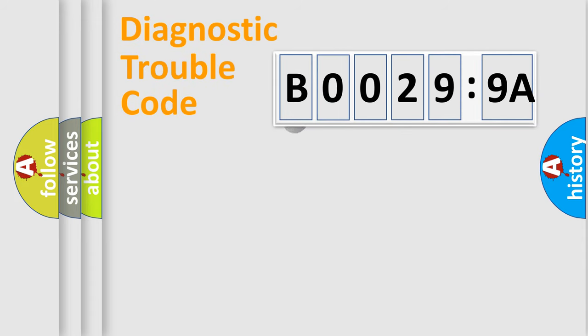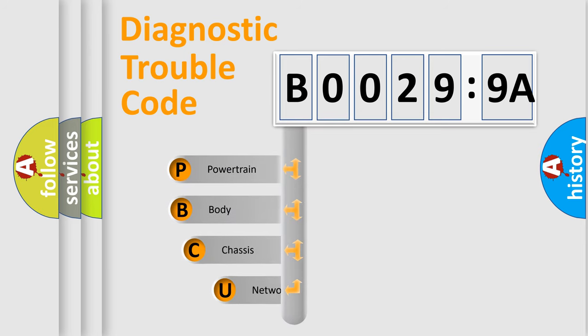First, let's look at the history of diagnostic fault code composition according to the OBD2 protocol, which is unified for all automakers since 2000. We divide the electric system of automobile into four basic units.